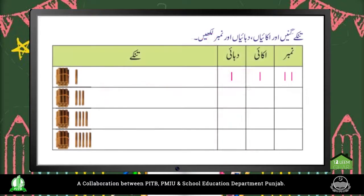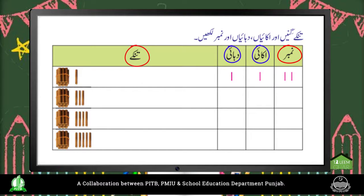Come children, now we will count the sticks and write the ones (Ikaayi) and tens (Dahaayi). Here there is a column for number, ones (Ikaayi), tens (Dahaayi), and sticks. We will count the bundles of sticks, add more sticks to them, write the number, and then read about ones and tens.